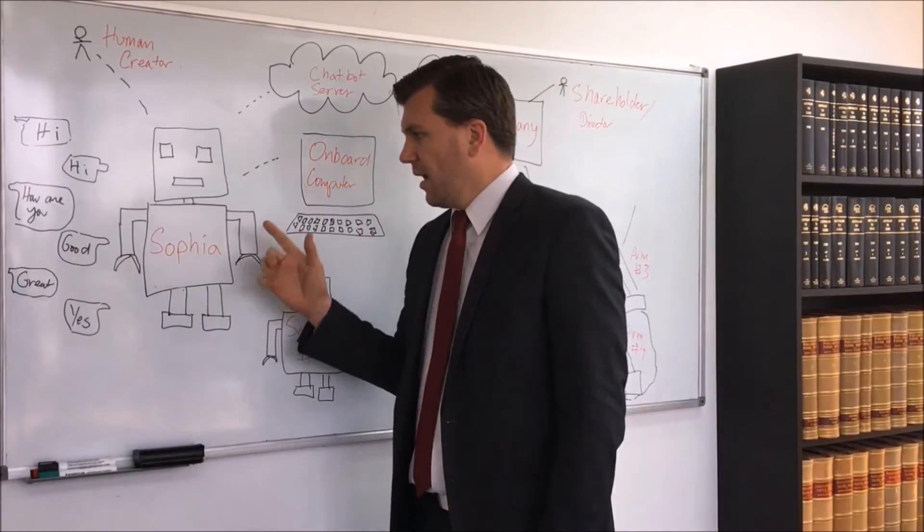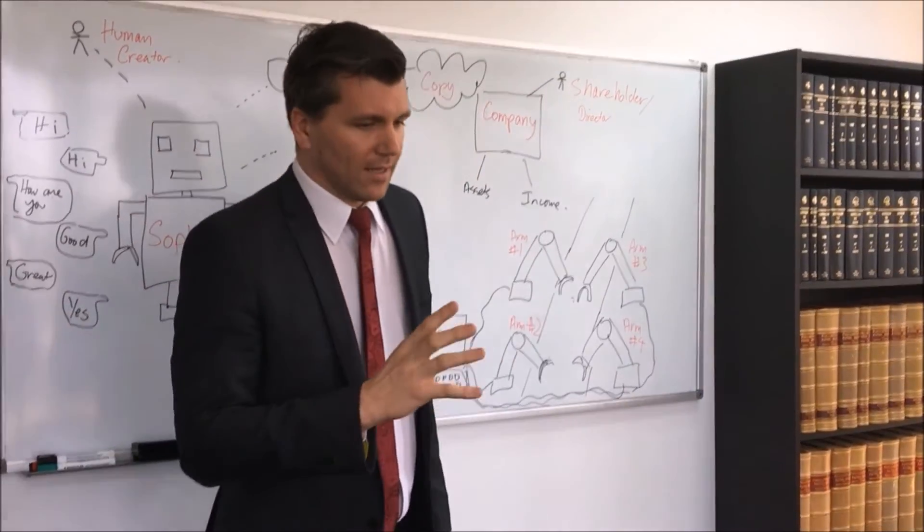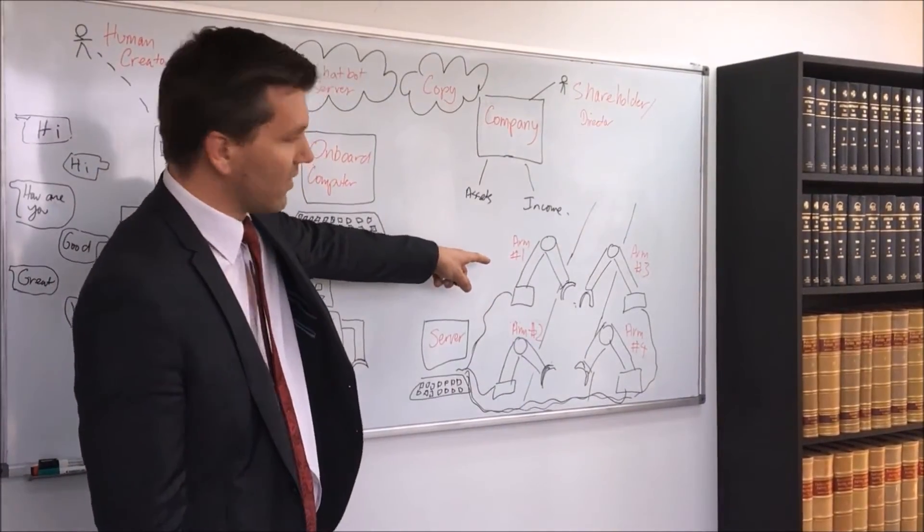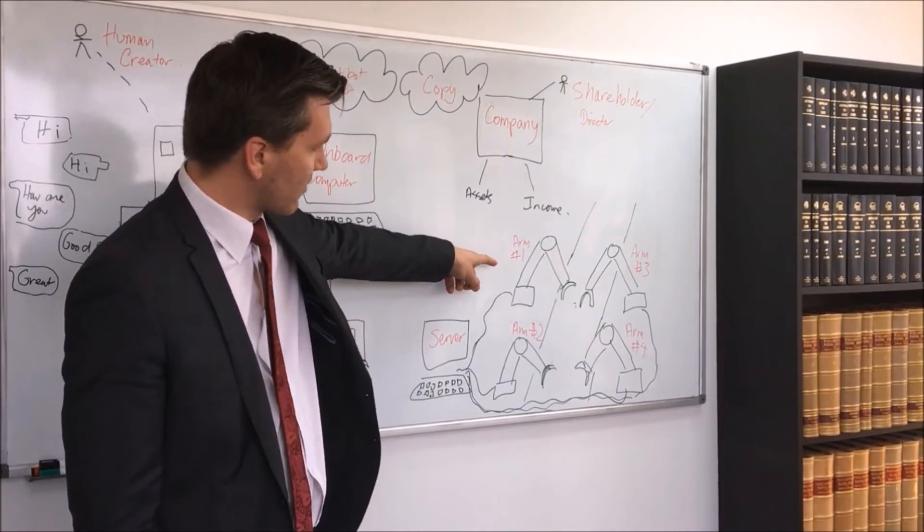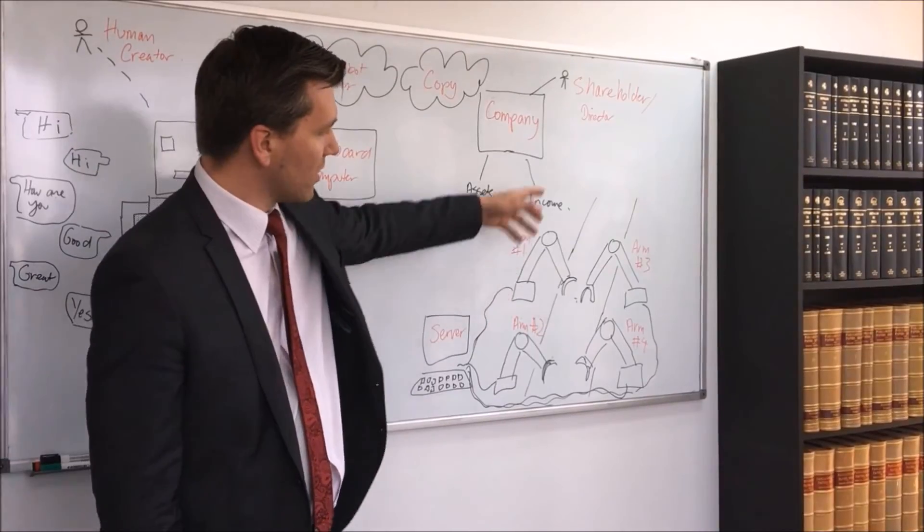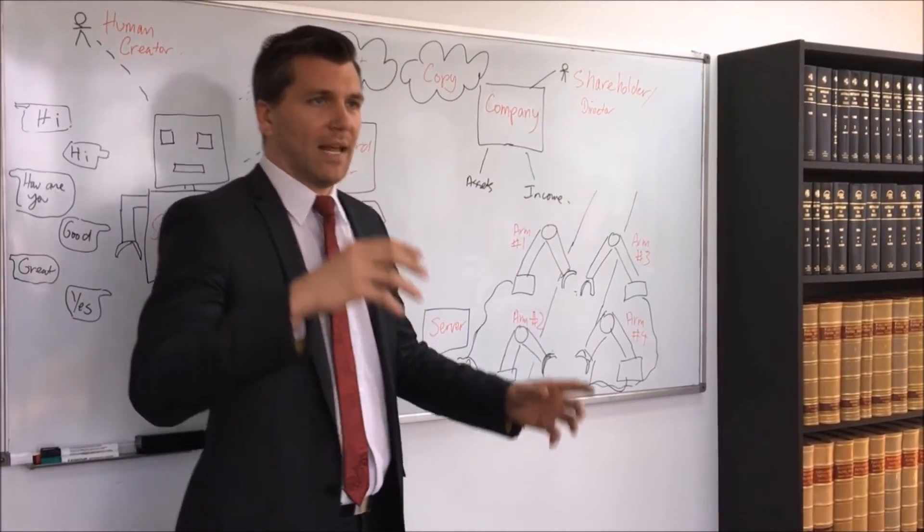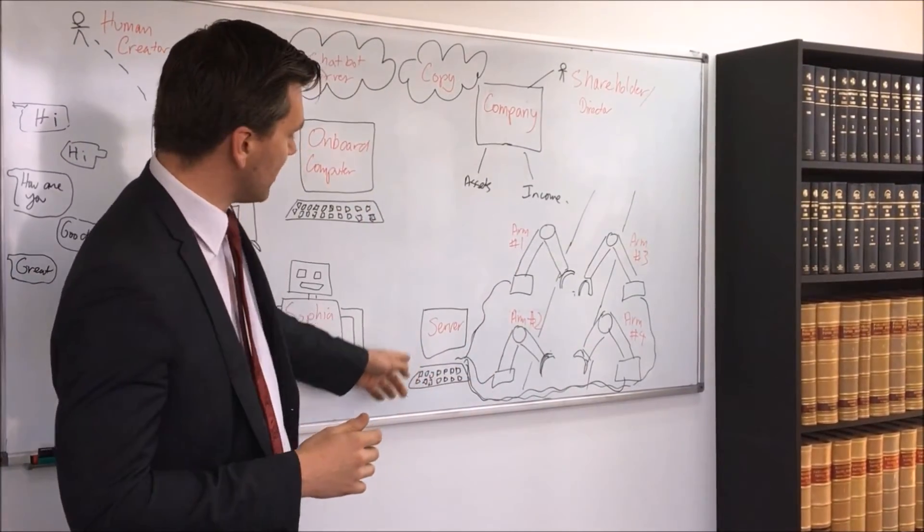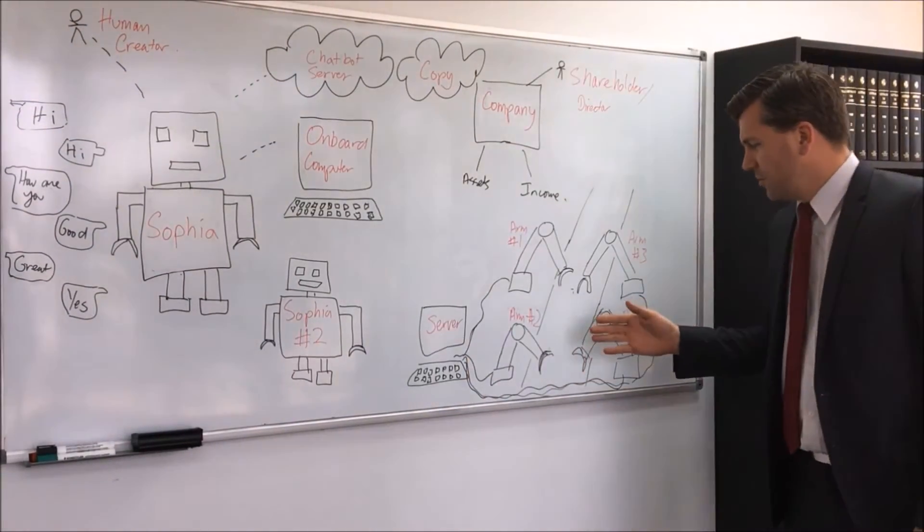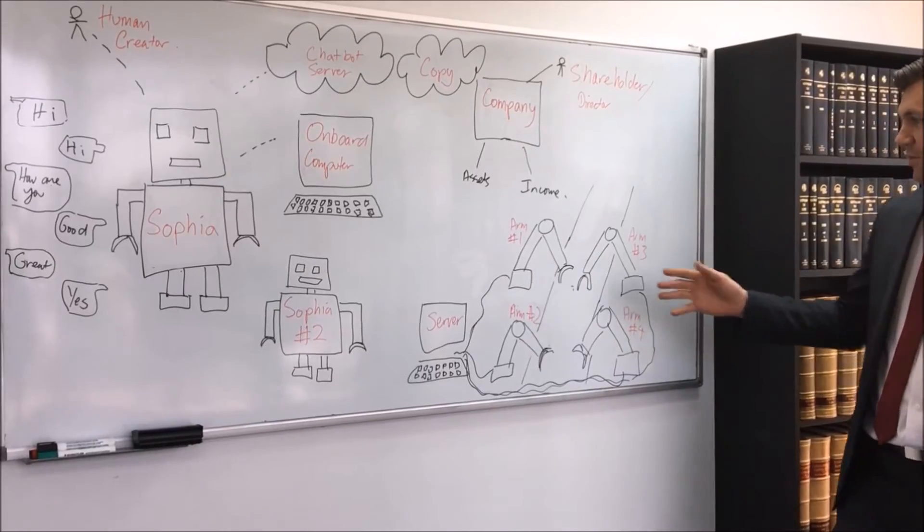So, now, let's have a complex scenario here. What happens if we have more industrial robots? Here we've got one, two, three, four arms of industrial robots on a conveyor belt helping. Now, these are all controlled by one central server. Now, here, what would you give robot personhood to?